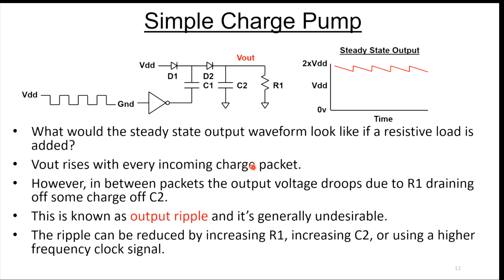What would the steady state output waveform look like if you had a resistive load? We're going to add a resistive load on the output. V-out rises with every little incoming charge packet. It starts DC-wise at 2x VDD. In between charge packets, you get this little droop, and then it gets charged again, and then it droops and charged again.